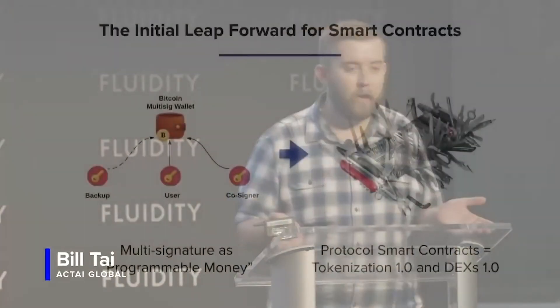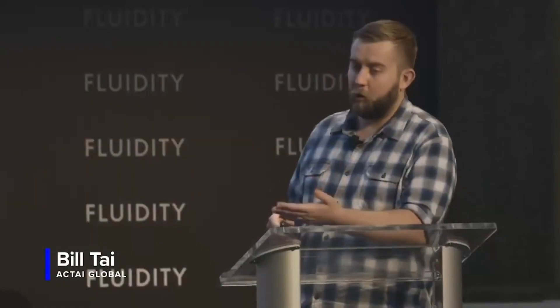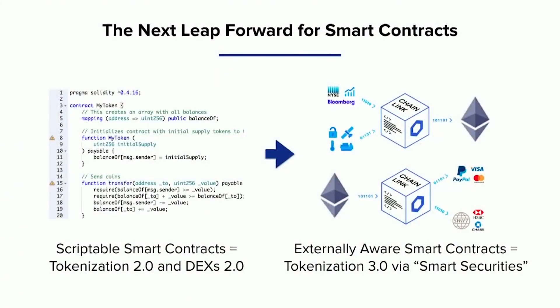You could even have self-modifying code. When this space started out, the idea of programmable money was basically Bitcoin multi-signature — you could program money to move on the basis of multiple signatures. This in and of itself was an exciting concept that drew a lot of people into the space, including me. Then you had an evolution into something called protocol-based smart contracts.